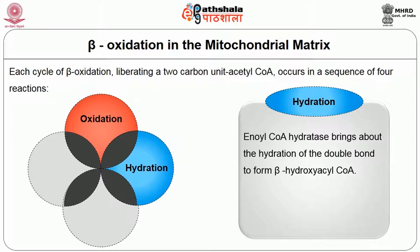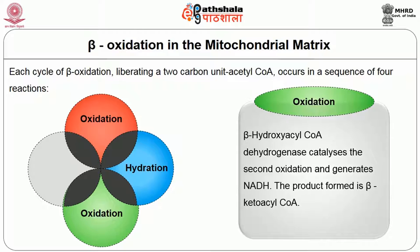Enoyl-CoA hydratase brings about the hydration of the double bond to form beta-hydroxyacyl-CoA. In the third step, beta-hydroxyacyl-CoA dehydrogenase catalyzes the second oxidation and generates NADH. The product formed is beta-ketoacyl-CoA.